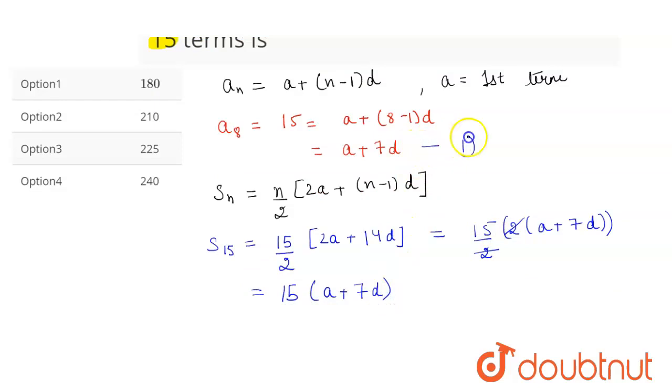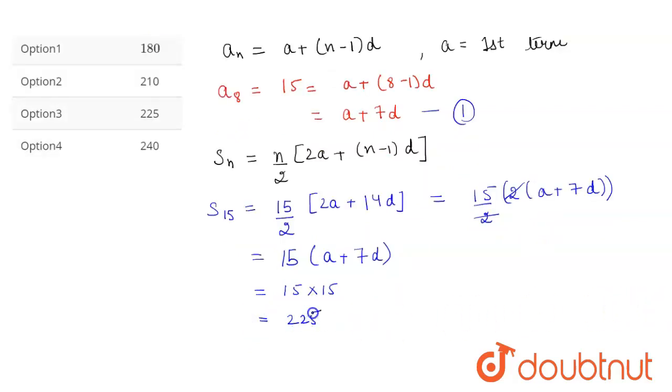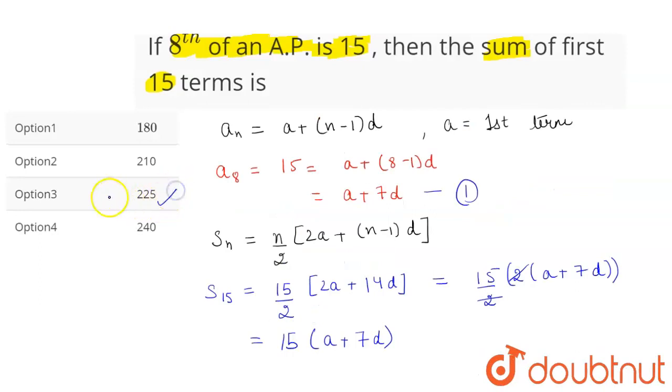Now from this equation, we have the value of a plus 7d to be 15. So this will be 15 into 15 which is equal to 225. Seeing our option, option number 3 is the correct answer.